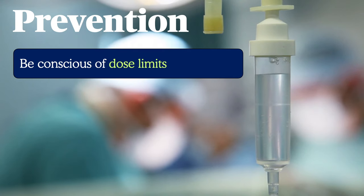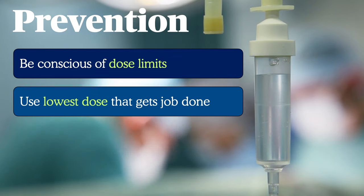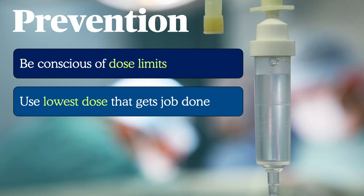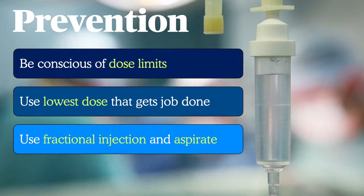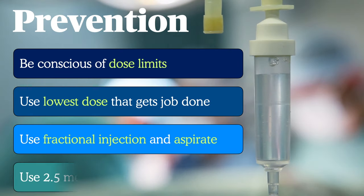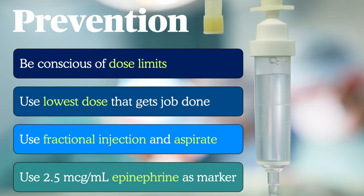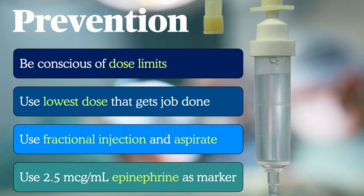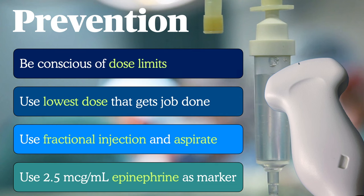To prevent LAST, be conscious of published dose limits — they're a good framework even if they don't account for injection site or patient factors. Use the lowest dose possible that achieves the analgesia needed. Fractional injection means pausing 20–30 seconds between each 4–5 mL aliquot to allow plasma concentration to begin to fall. Always aspirate before each dose. Epinephrine is used as a marker for inadvertent intravascular injection and also truncates peak plasma levels. Finally, use ultrasound — evidence shows ultrasound-guided blocks are associated with significantly reduced incidence of LAST.